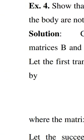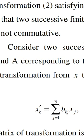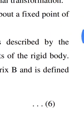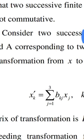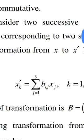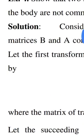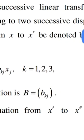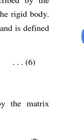Next, Example 4: Show that two successive finite rotations of a rigid body about a fixed point of the body are not commutative. Solution: Consider two successive linear transformations described by matrices B and A, corresponding to the two successive displacements of the rigid body.